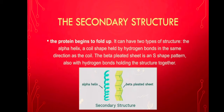Now let us talk about the secondary structure of protein folding. The protein begins to fold up. It can have two types of structure in the secondary structure: the alpha helix, a coil shape held by hydrogen bonds in the same direction as the coil, and the beta pleated sheet, an S-shaped pattern also held together with hydrogen bonds. The secondary structure refers to local folded structures that form within a polypeptide due to interactions between atoms of the backbone.